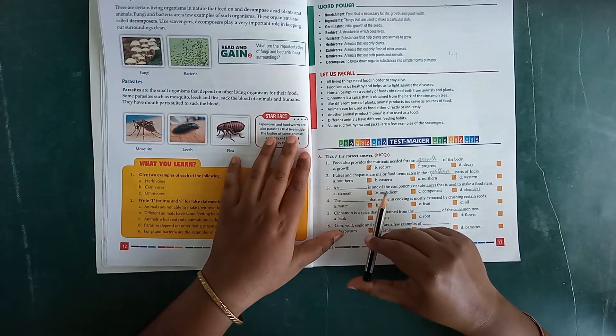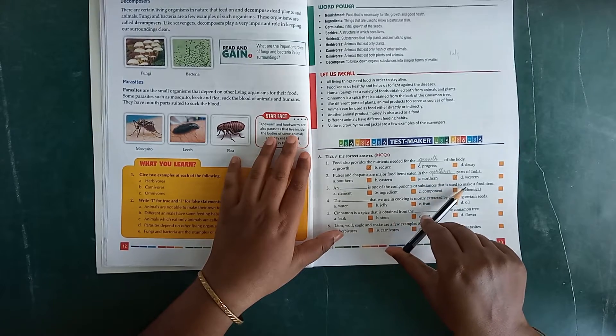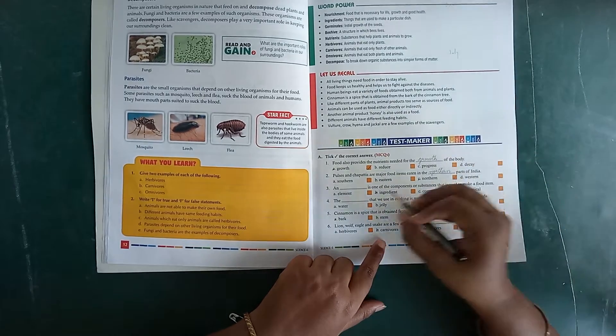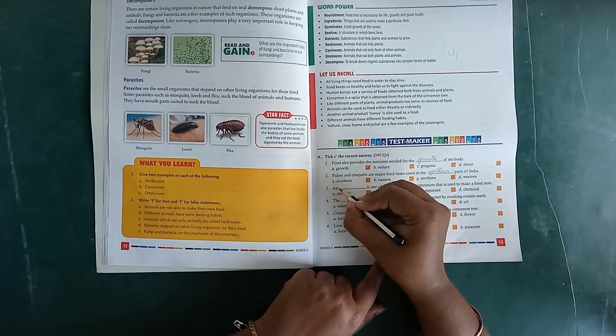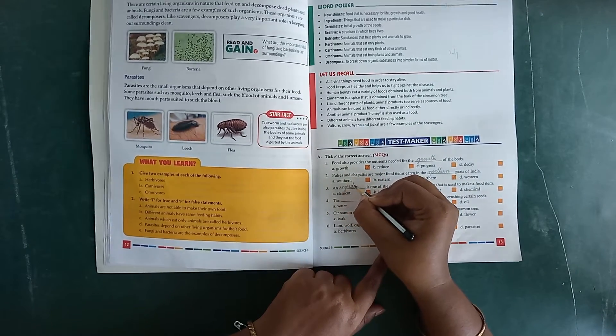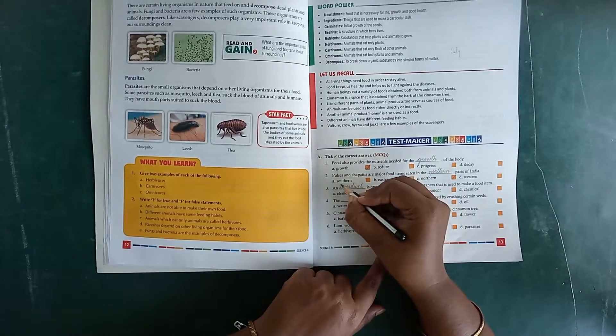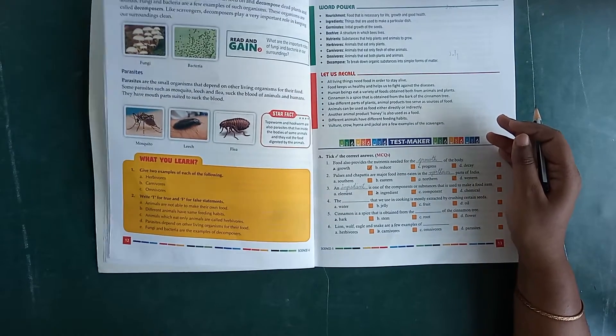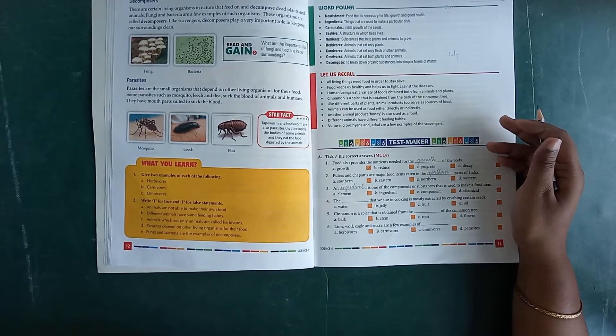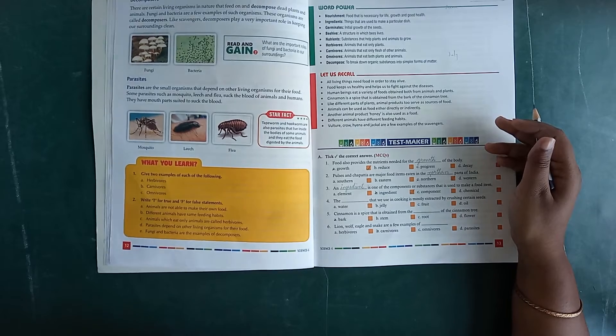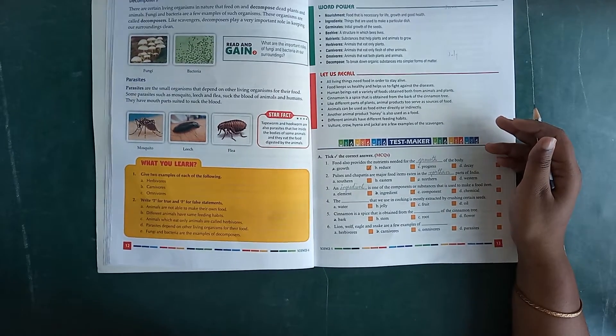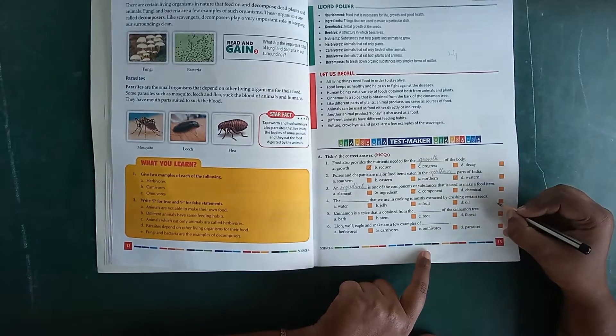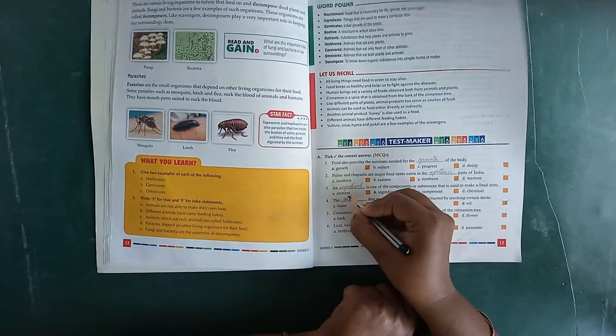Dash is one of the components or substances that is used to make a food item. A. Element. B. Ingredient. C. Component. Or D. Chemical. It's B, Ingredient. Tick it here and write down here also I-N-G-R-E-D-I-E-N-T, Ingredient. Ingredient is one of the components or substances used to make a food item. Then number 4. The dash that we use in cooking is mostly extracted by crushing certain seeds. Water? B. Jelly? C. Seafruit or D. Oil? Obviously it's D, Oil. Tick D, Oil, and write here O-I-L.